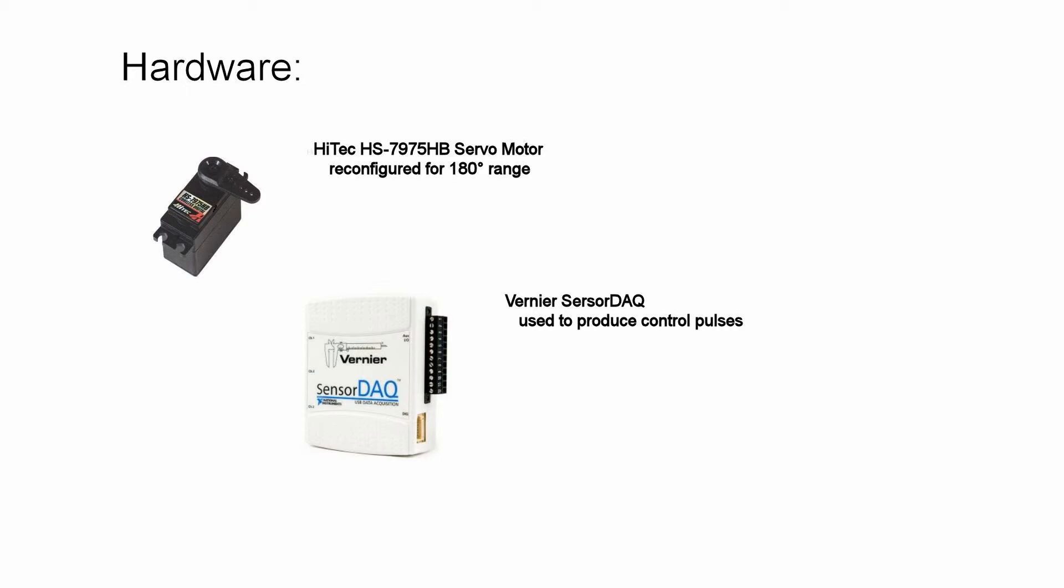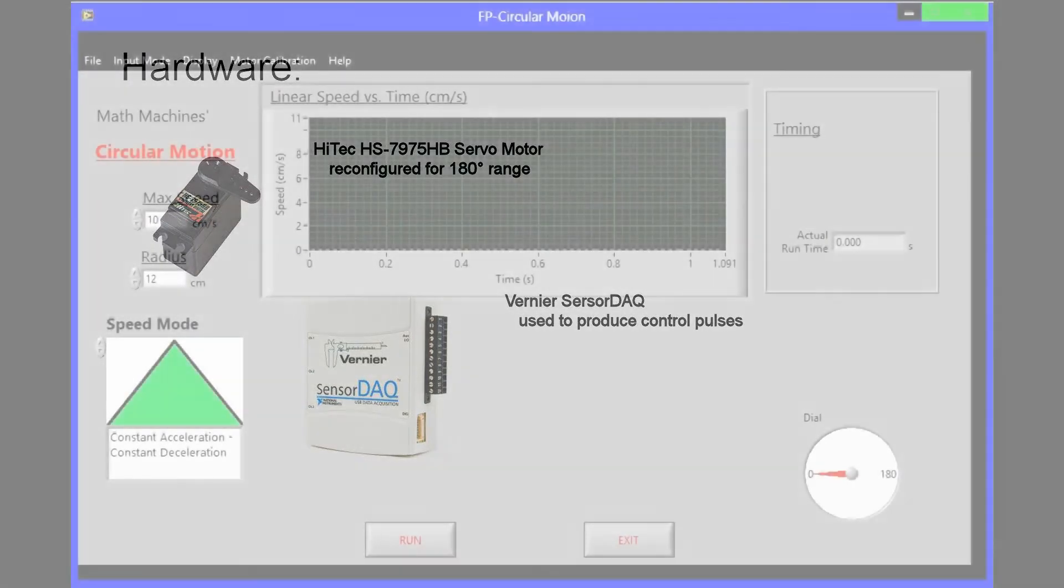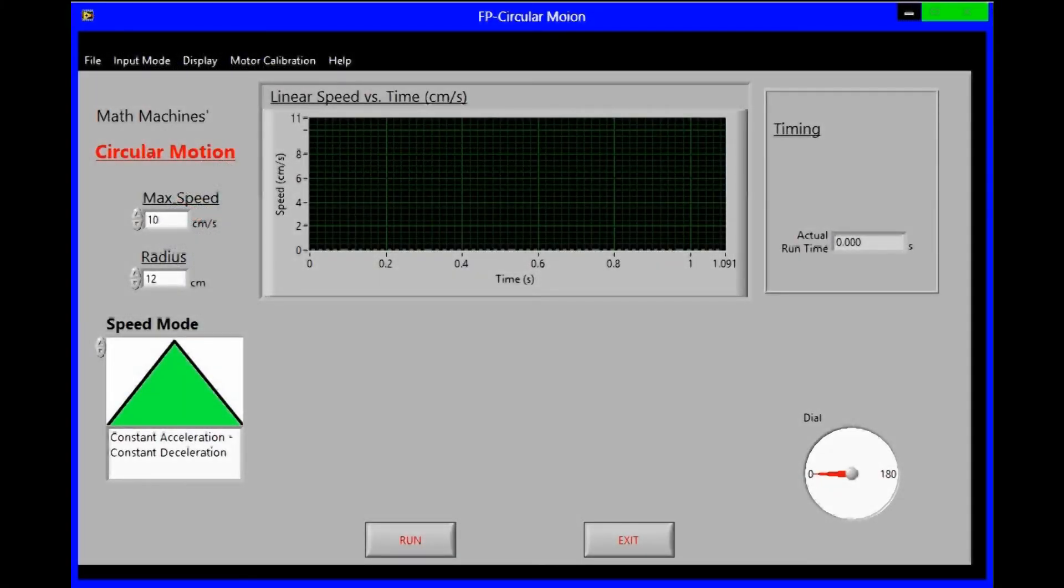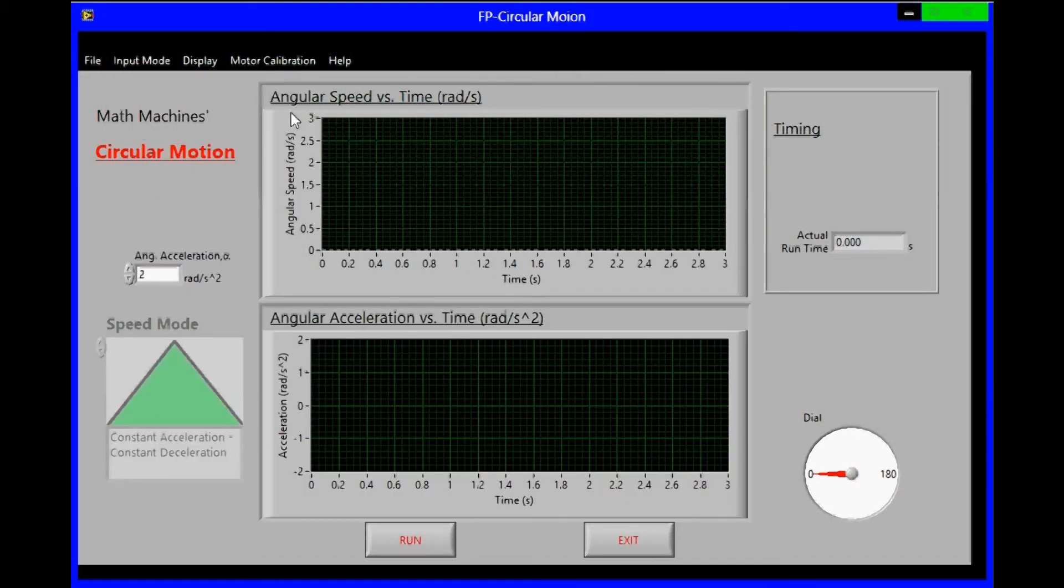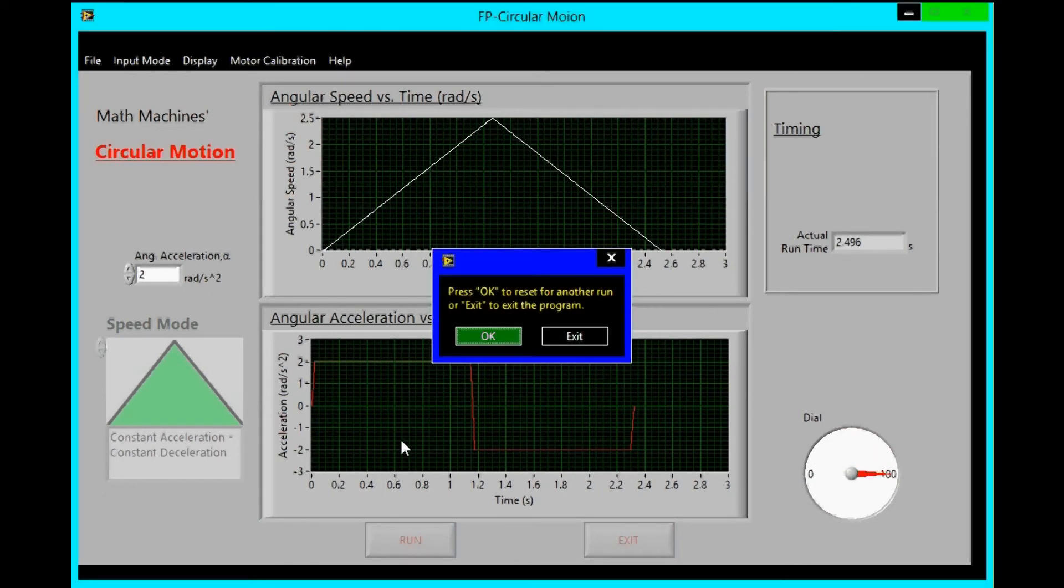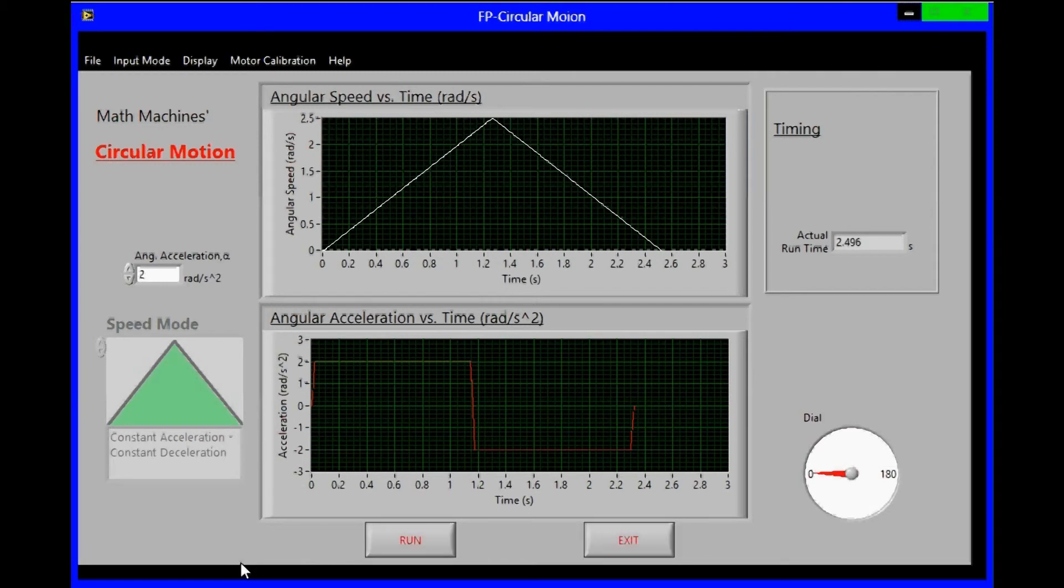The hardware used in this activity is built from a high-tech HS7975HB hobby servo motor, reconfigured to give it a 180 degree range, and a Vernier sensor DAQ interface, which is used to produce the pulses necessary to control the servo motor. The control software was written by Learning with Math Machines using LabVIEW. There are a variety of options available in this software package, but here we're using it simply to input the maximum angular acceleration, and we've selected to do that in units of radians per second. It's simply a matter of typing in the desired angular acceleration and pressing run.